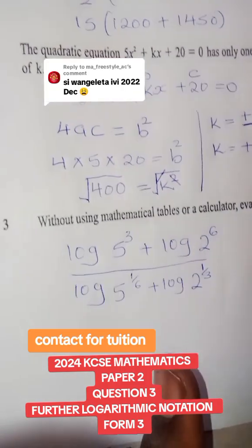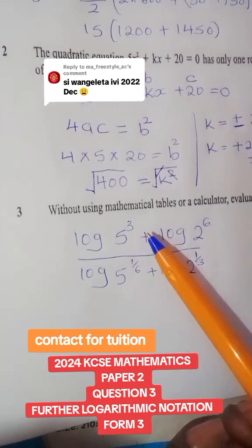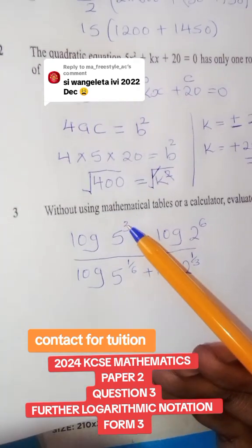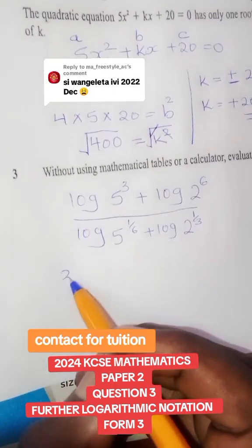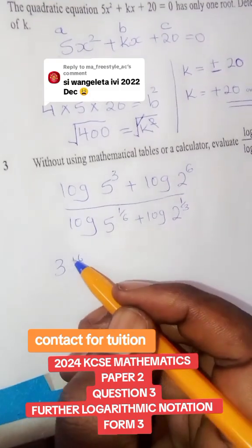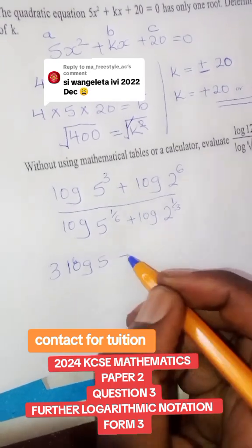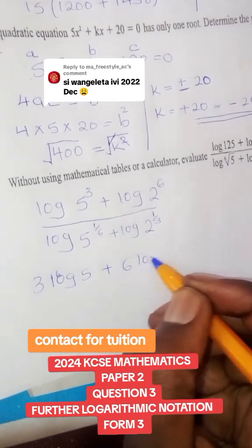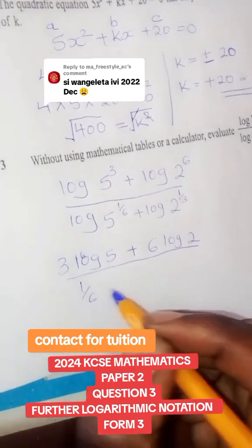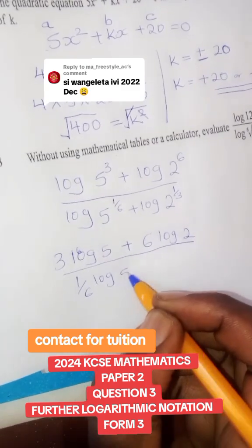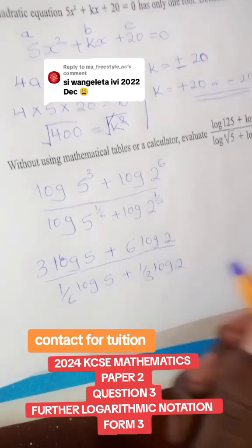After writing that, we are now going to follow still the third law of logarithms, where if you have a power, you bring it to the front of the logarithm. So we will say 3 log 5, plus 6 log 2, over one-sixth log 5, plus one-third log 2.